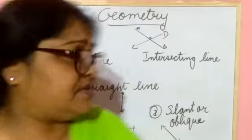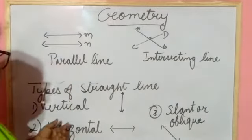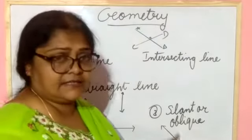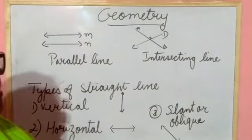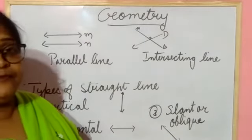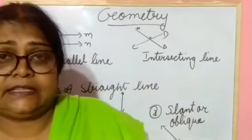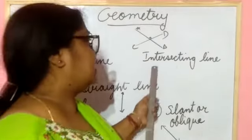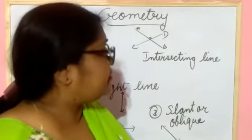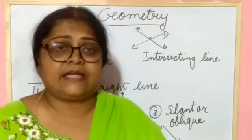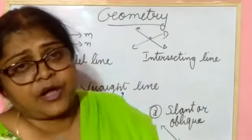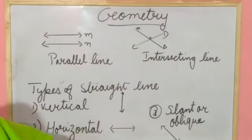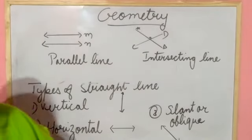Secondly, you have seen the types of straight line: vertical line, horizontal line if it is like this, and slanting line. After that, you learned about parallel line and intersecting line. If two lines are there and we extend them from both sides and they do not join each other, that is a parallel line. And intersecting line is where line AB and line CD cut each other at point O.